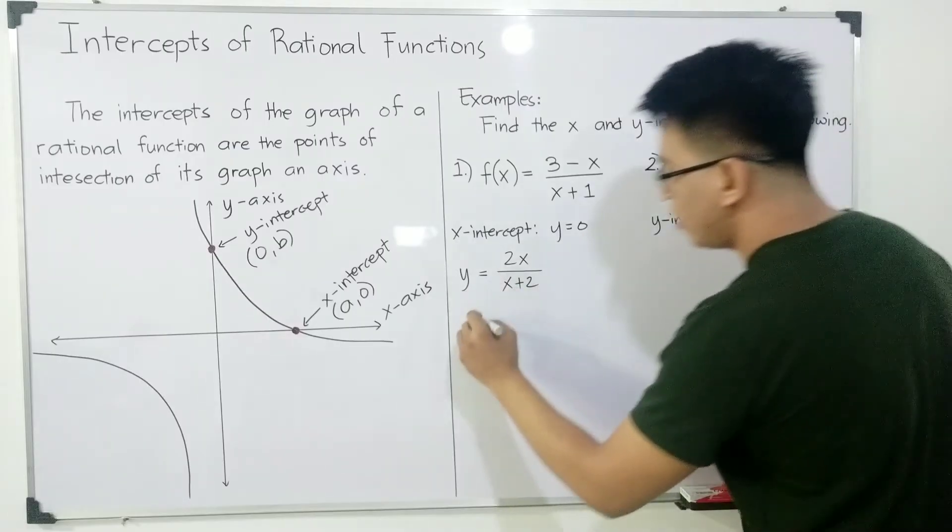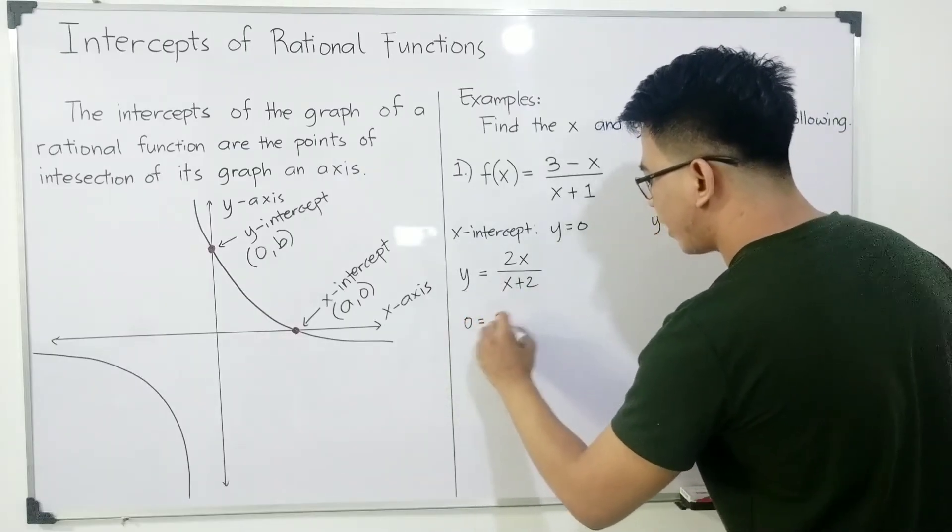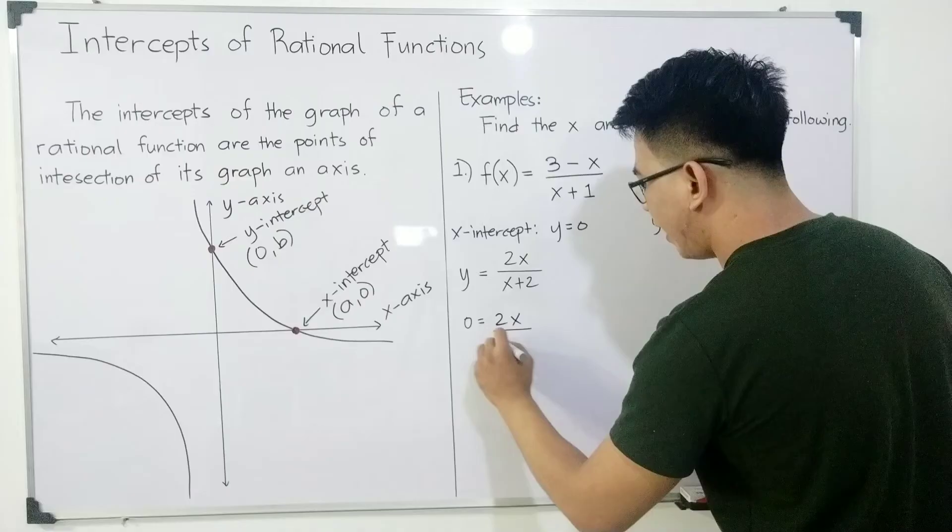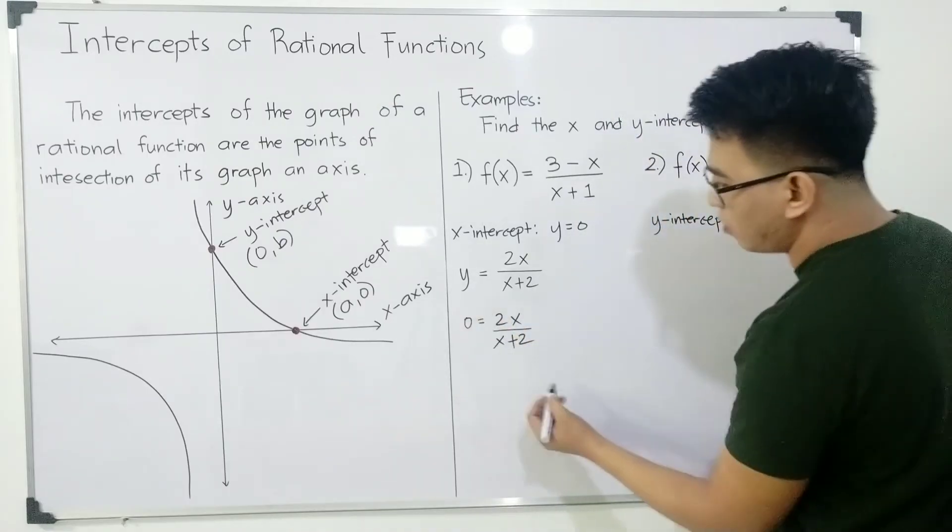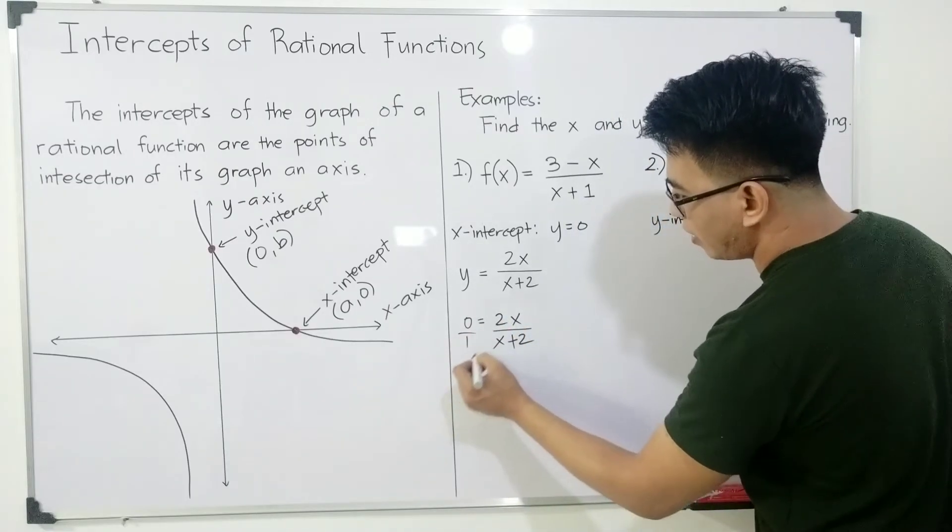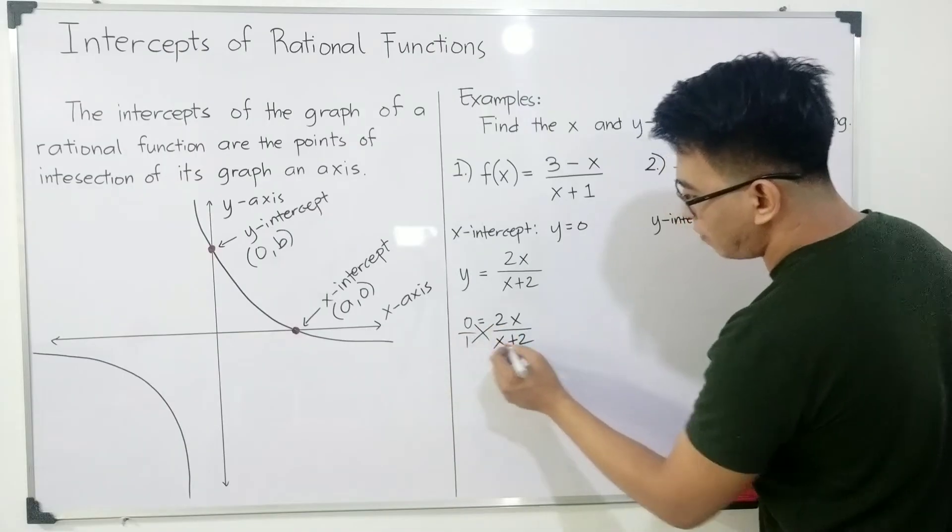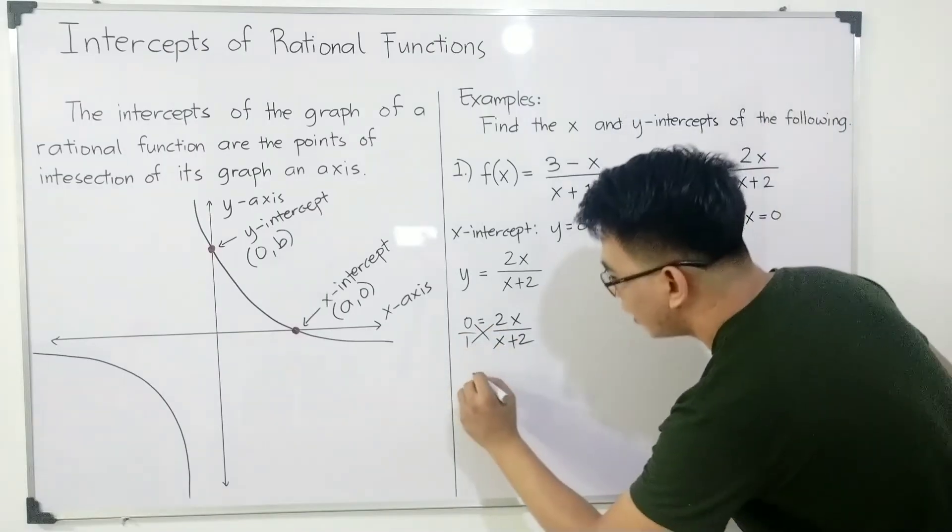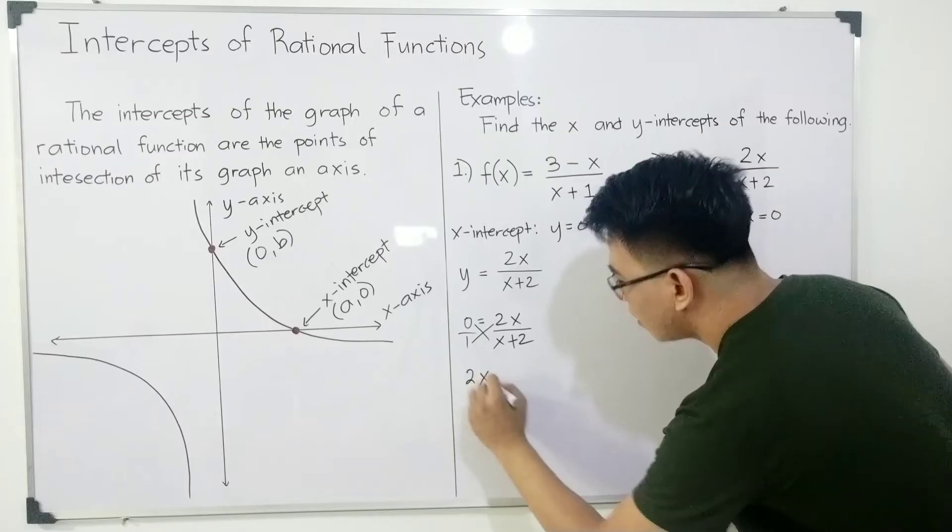We'll make this 0. So 0 = 2x/(x+2). Now, we will cross-multiply. We have an invisible 1 here. Cross-multiply and cross-multiply. 2x times 1 is 2x.